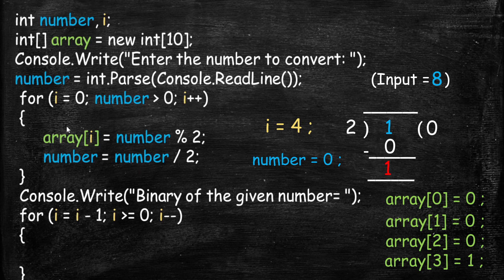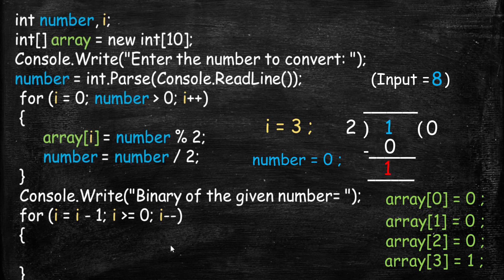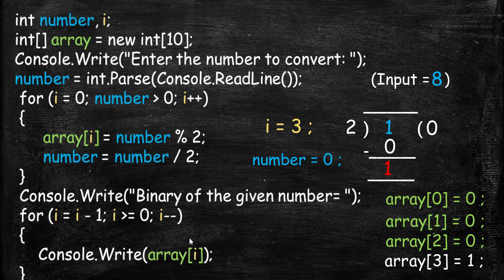Basically, whatever the first for loop runs, it always ends with i equal to 4, so we set i to 4 minus 1, which is 3. Then we check if i is greater than or equal to 0 — the condition is true. We go into the loop and print the array at index i, which is 3, so it prints 1 first, as expected in reverse order.